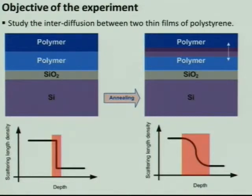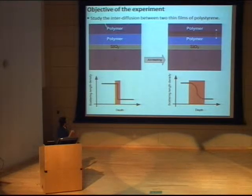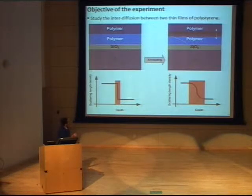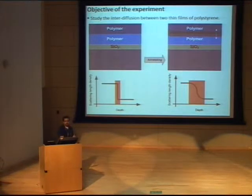The objective of our experiment, as Ryan described, is to study the interdiffusion between two polystyrene layers. To achieve that, we have a deuterated polystyrene thin film on top of a hydrogenated polystyrene film. The idea is that after annealing, we should see a change in the scattering length density profile, and the neutron reflectivity would let us see that very clearly.